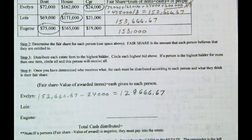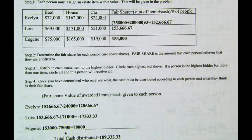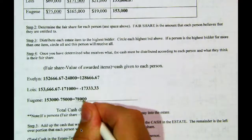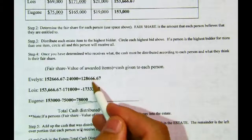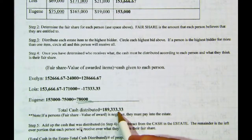Now do Lois and Eugene. Lois has $153,000 and something minus $171,000 — she ends up negative, meaning she'll have to pay in, because she's getting an item worth more than her fair share. Eugene has $153,000 minus $75,000, giving $78,000. From these three values, we add them up to find the total cash distributed, keeping Lois's value as a negative number.